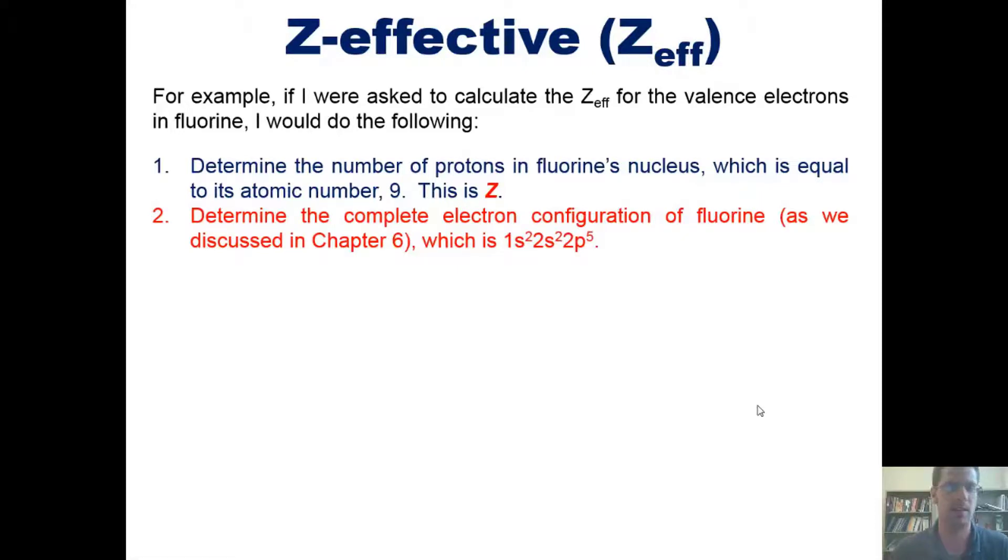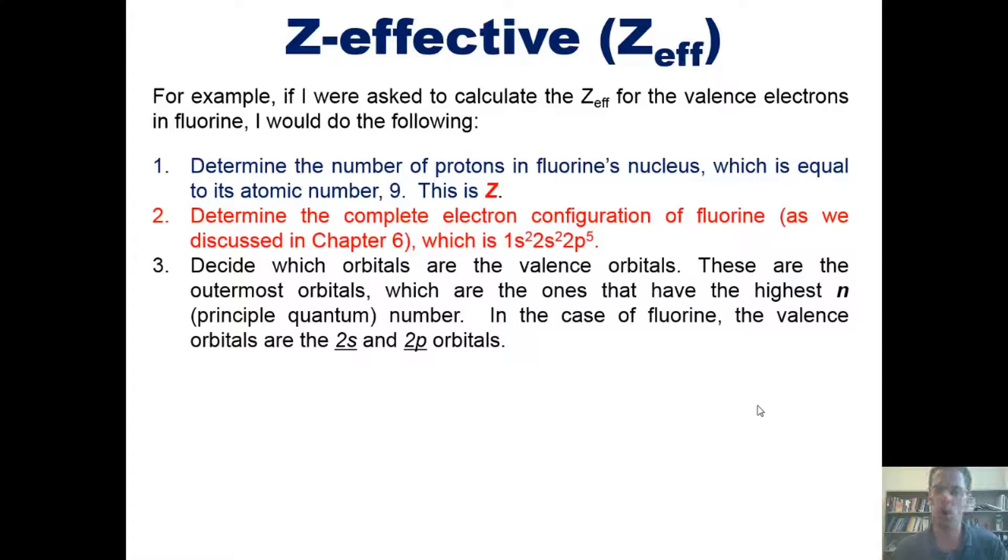Three, decide which orbitals are the valence or outermost orbitals. Now, these outermost orbitals, the valence orbitals, are the ones that have the highest n or principal quantum number. In the case of fluorine, the valence orbitals are the 2s and 2p orbitals. Those are the valence orbitals because they have the largest number, this 2, in front of each of them, which is larger than 1 for the 1s orbital.